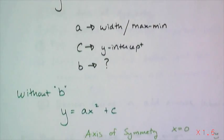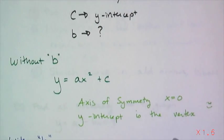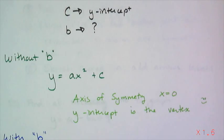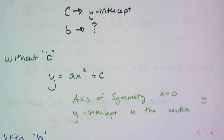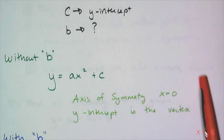Now without the b term, I have a quadratic of this form, y equals ax squared plus c. Any quadratic that is missing the bx or that linear term, and it's just the quadratic term and the constant, they all have axes of symmetry at x equals 0. So the y-axis is always the line of symmetry for that parabola. And its y-intercept is always going to be the same point as the vertex.